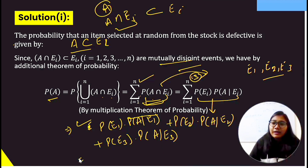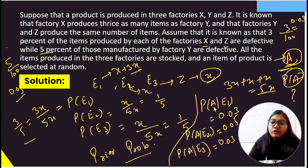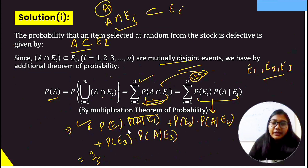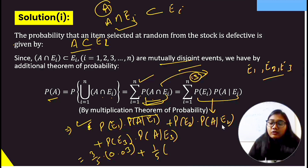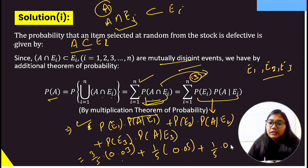By the total probability formula (multiplication theorem): P(A) = P(E1)·P(A|E1) + P(E2)·P(A|E2) + P(E3)·P(A|E3). Substituting values: (3/5)×0.03 + (1/5)×0.05 + (1/5)×0.03.